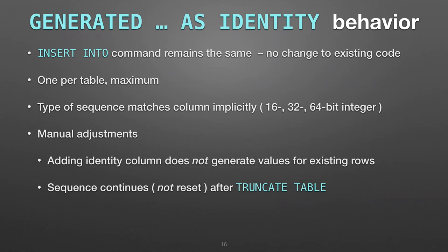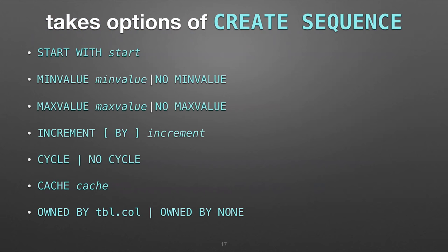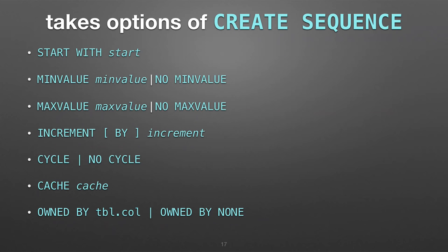Data type is automatic now because you explicitly declare your data type. All the features that are in a sequence carry over — some people may not be familiar with these because you don't often need them. You can start your sequence at a certain number, set minimums and maximums, make an increment like every other number (1, 3, 5, 7), cycle back to the beginning, and use cache — when you say you want to create a bunch of numbers at once, it can be more efficient to just increment the sequence at once. All of this you can add to your generated as identity.